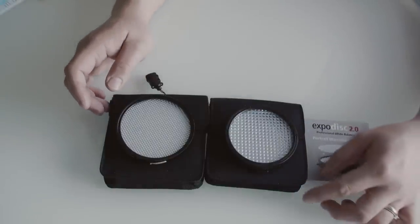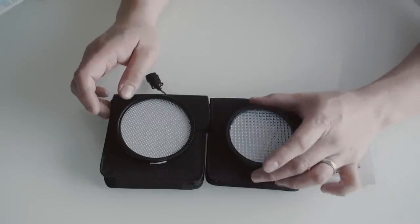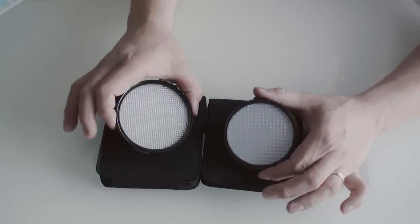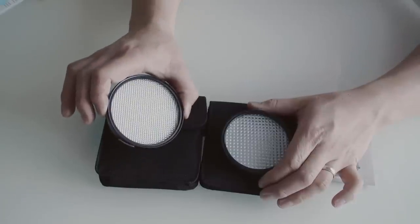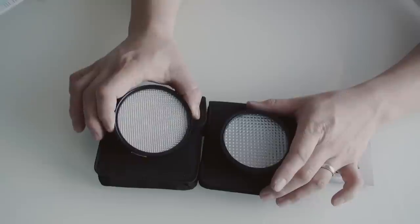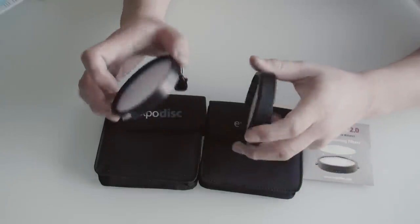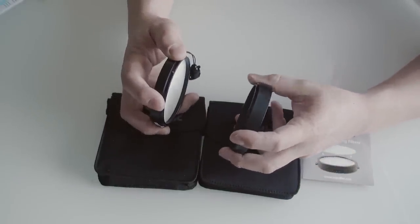So at a quick glance the differences between the two are noticeable in that the prism pattern on the front of the new version is more coarse than the original ExpoDisc 1.0. The other notable difference is the construction and fit and finish of the ExpoDisc.